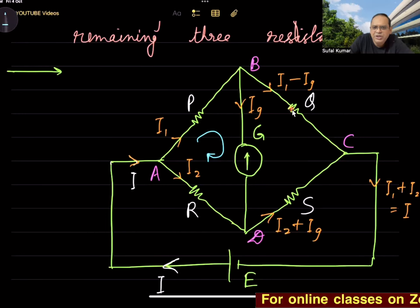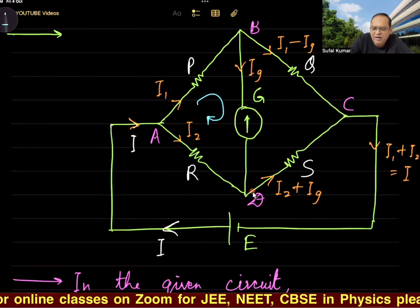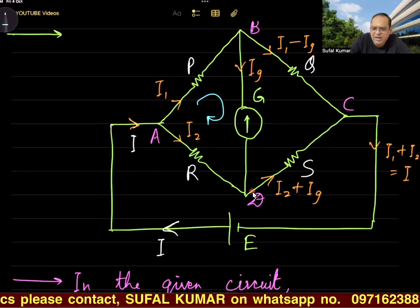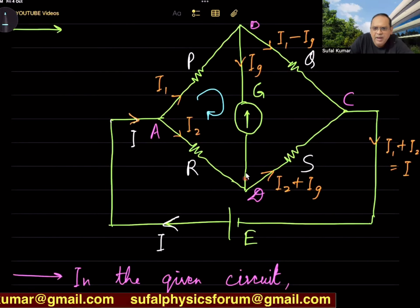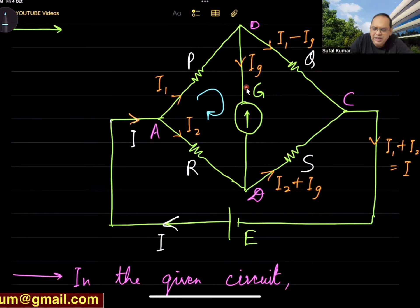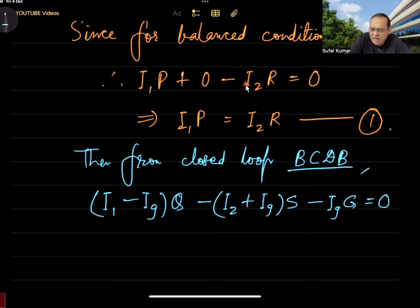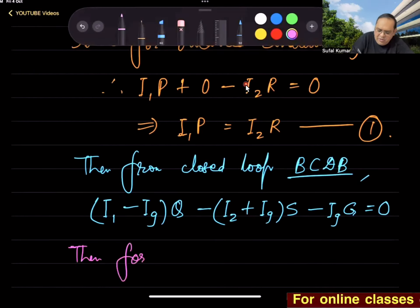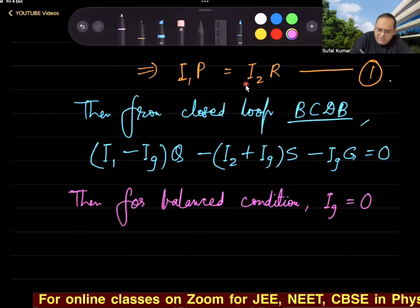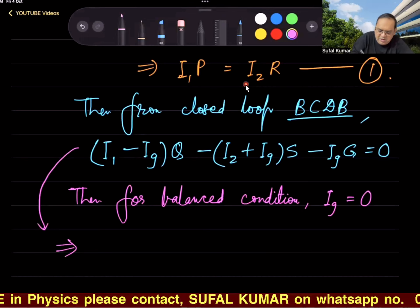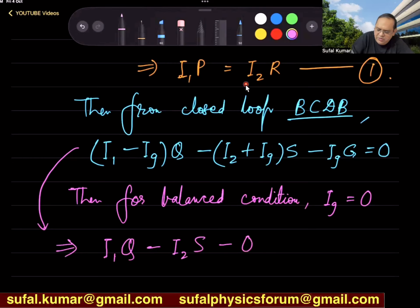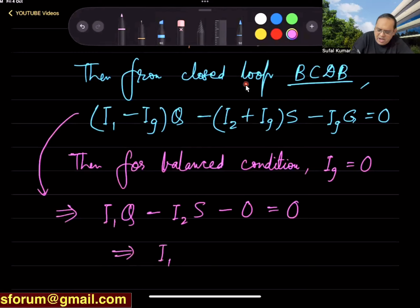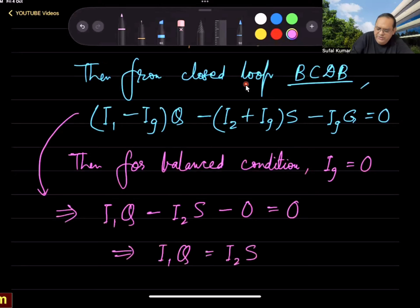Then what's the remedial measure for this kind of circuit if it is not balanced? That means P/Q is not equal to R/S. Then the only remedial measure to solve the circuit is to apply Kirchhoff's law for finding out any particular current or any particular resistance in the given format of circuit. Now let's derive this condition. If we apply Kirchhoff's voltage law in the circuit ABDA: I₁P + IgRg.